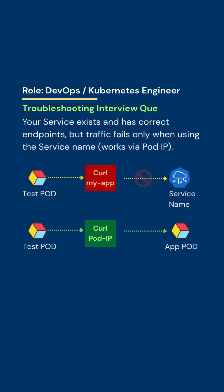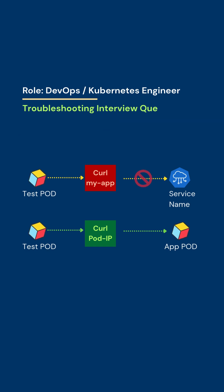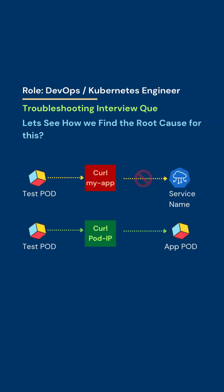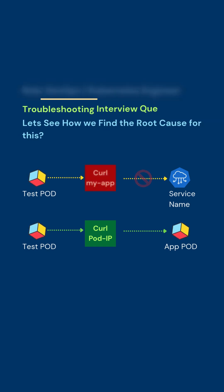Your service exists and has correct endpoints, but traffic fails only when using the service name. Let's understand how we can find the root cause for this.